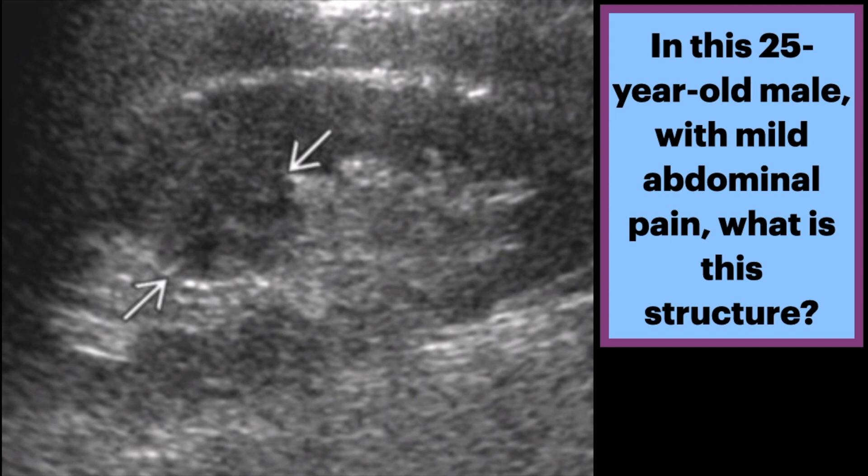It is located at the junction of the upper and middle thirds of the kidney and contains renal pyramids. The renoform contour of the kidney is maintained.